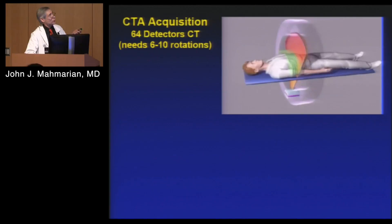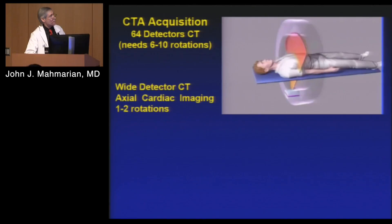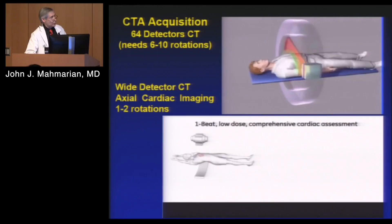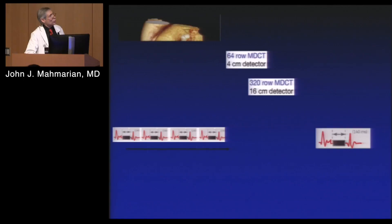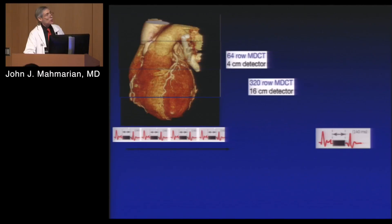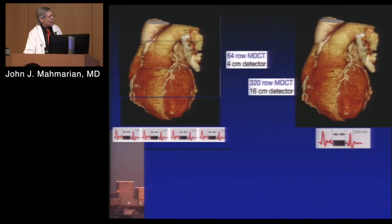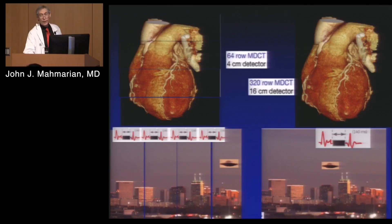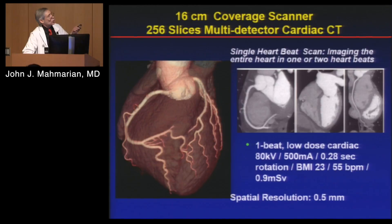CT scans are done with a 64-detector system where the patient moves through the gantry. We now have wide-angle 320-detector arrays that can get the whole patient in one rotation — one spin of the camera. With 64 detectors, you need several heartbeats to get a full image; with 320 detectors, you get it all in one. Think of it as a collage — you can see the whole picture at once versus piece by piece.